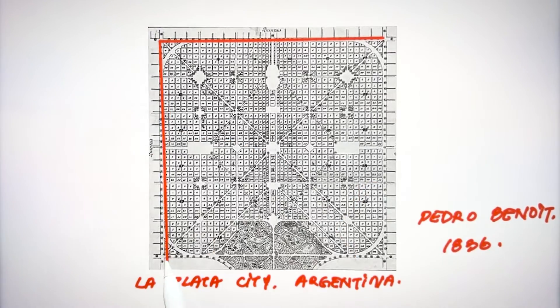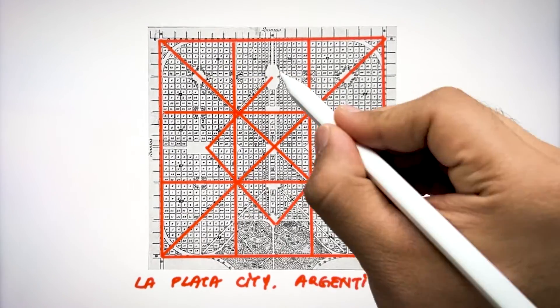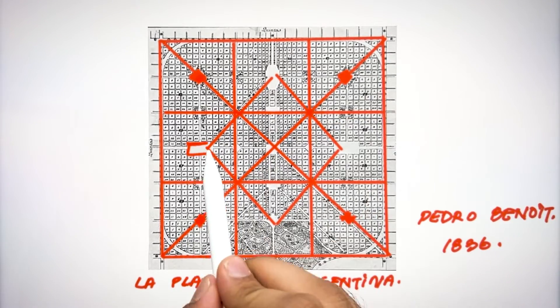This is the plan of La Plata city in Argentina designed by Pedro Benoit in 1836. This also follows the concept of nine grid with a change in axis.